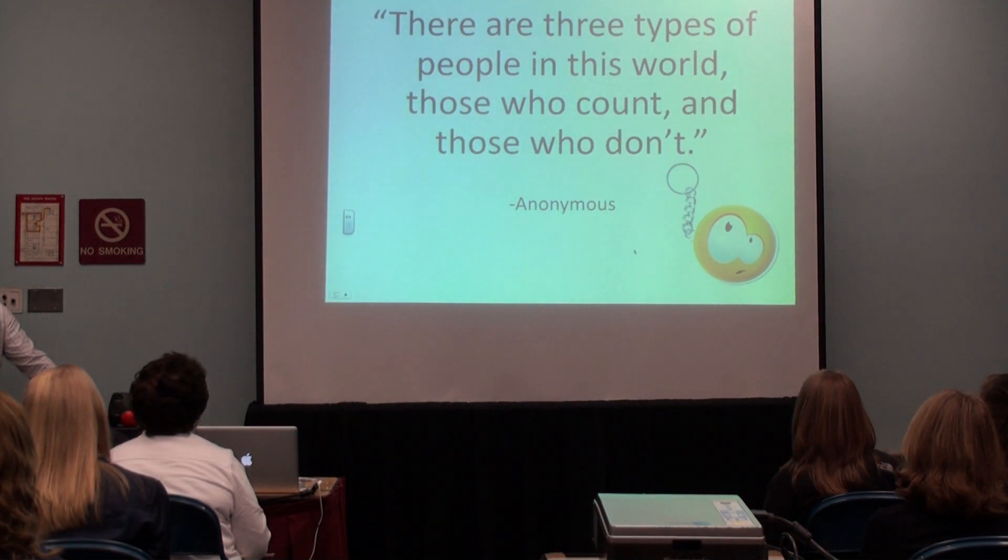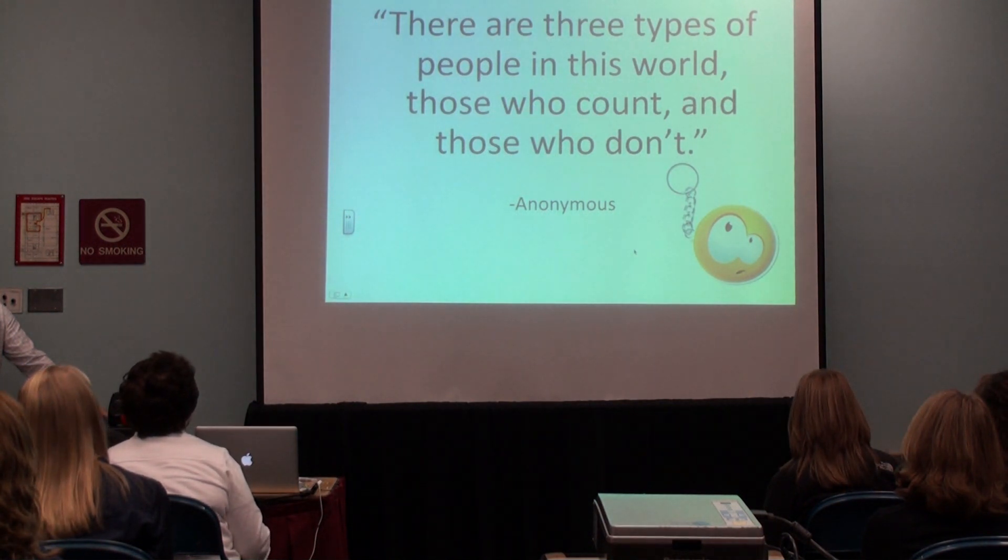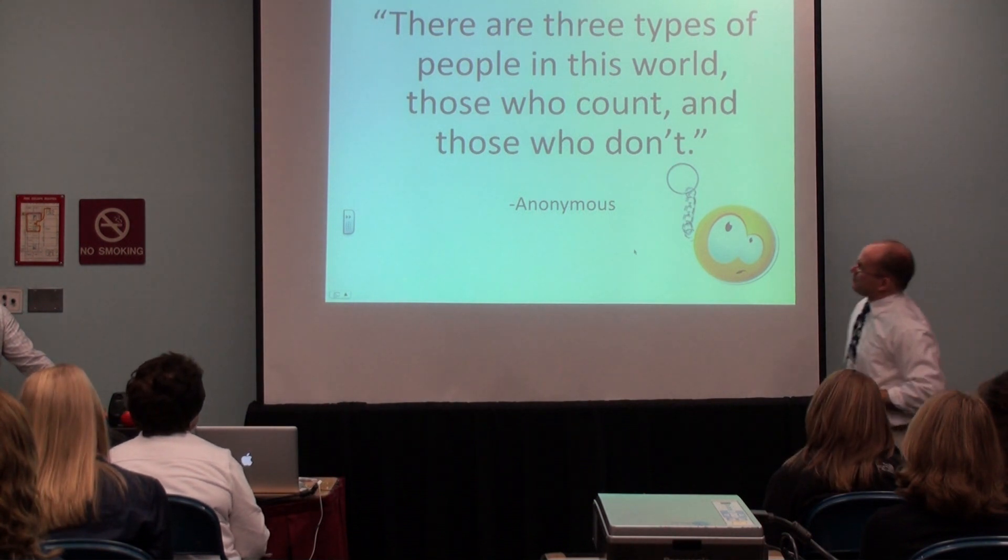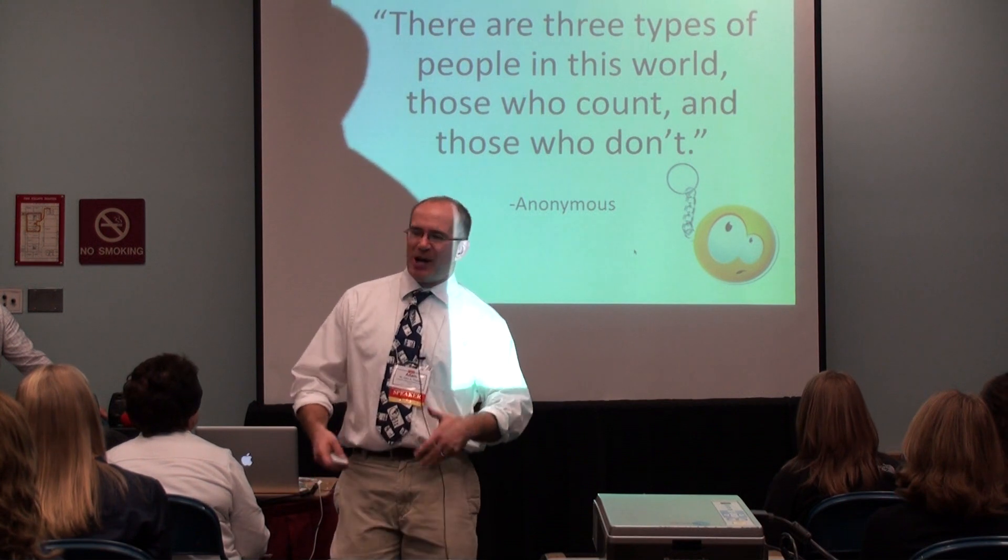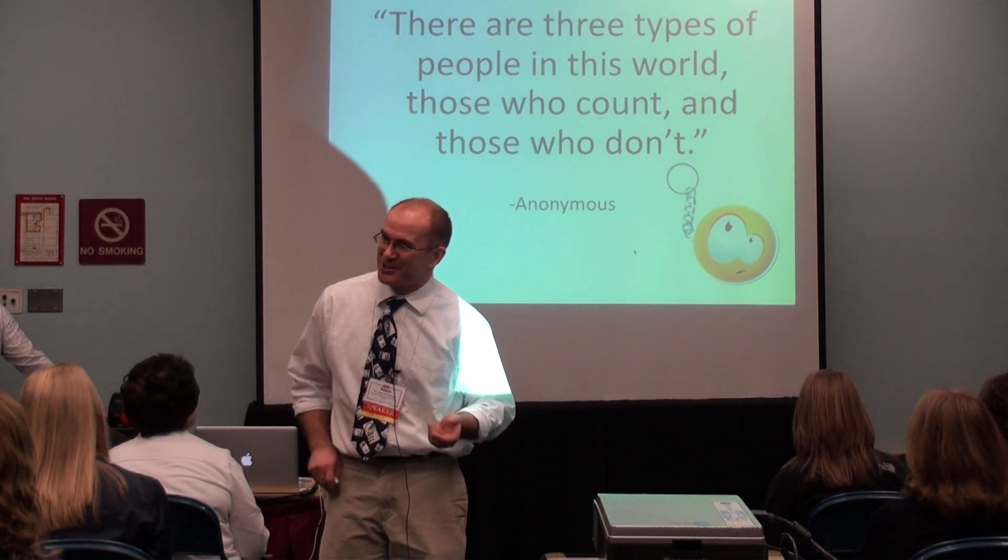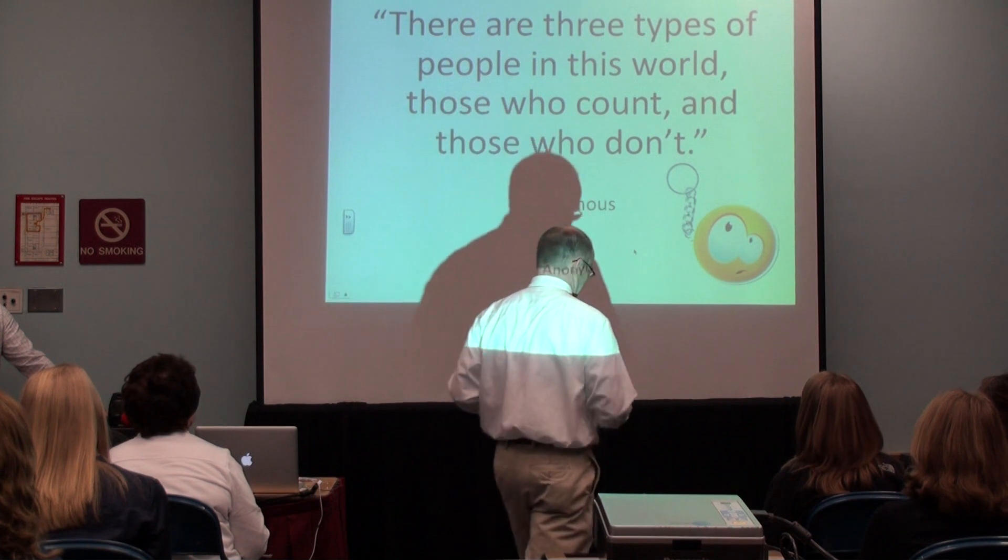And this quote here, last quote here, a little different one, an anonymous person said this, that there are three types of people in this world, those who can count, and those who don't. And I think mathematics is going to help us choose which person we, which type of person we'd like to be, unlike anonymous here.